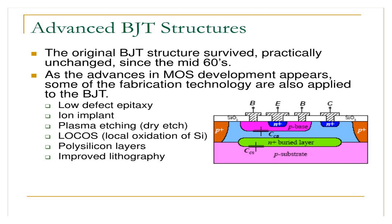Now, what is the advanced BJT structure? The original BJT structure survived practically unchanged since the mid-60s. As the advances in the metal oxide semiconductor development appeared, some of the fabrication technologies are also applied to the BJT such as low defect epitaxy, ion implant, plasma etching, local oxidation of silicon, polysilicon layer, improved lithography.